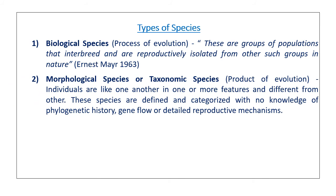The second one is the morphological species or taxonomic species. Here individuals are like one another in one or more features and different from others. These species are defined and categorized with no knowledge of phylogenetic history, gene flow, or detailed reproductive mechanisms.